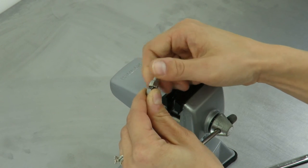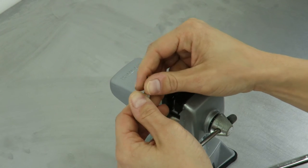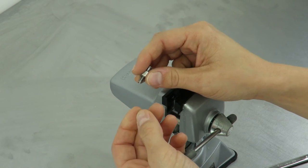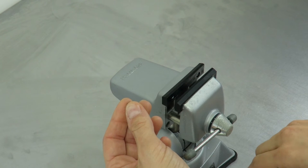First, unscrew the compression nut and remove the metal ferrule that comes in it. We won't be using this ferrule because it's specifically designed for fractional tubing.